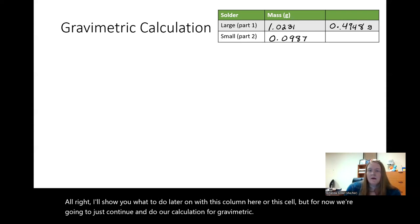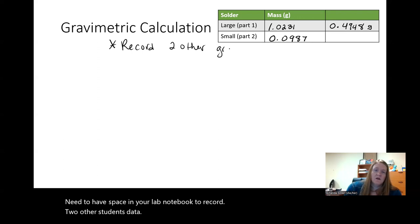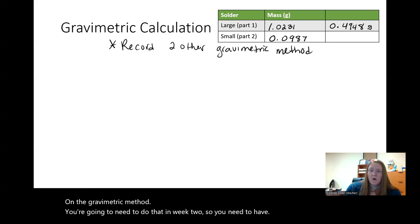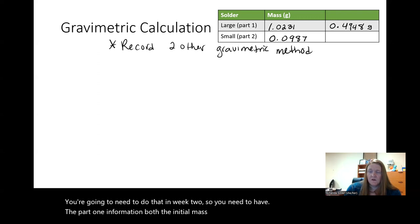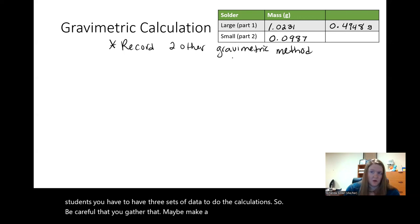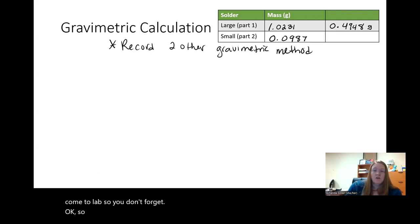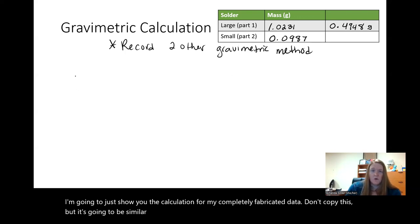Now importantly, you need to have space in your lab notebook to record two other students' data on the gravimetric method. You're going to need to do that in week two. So you need to have the part one information, both the initial mass and the mass at the end for at least two other students. You have to have three sets of data to do the calculations. So be careful that you gather that. Maybe make a spot for that in your notebook before you come to lab so you don't forget.